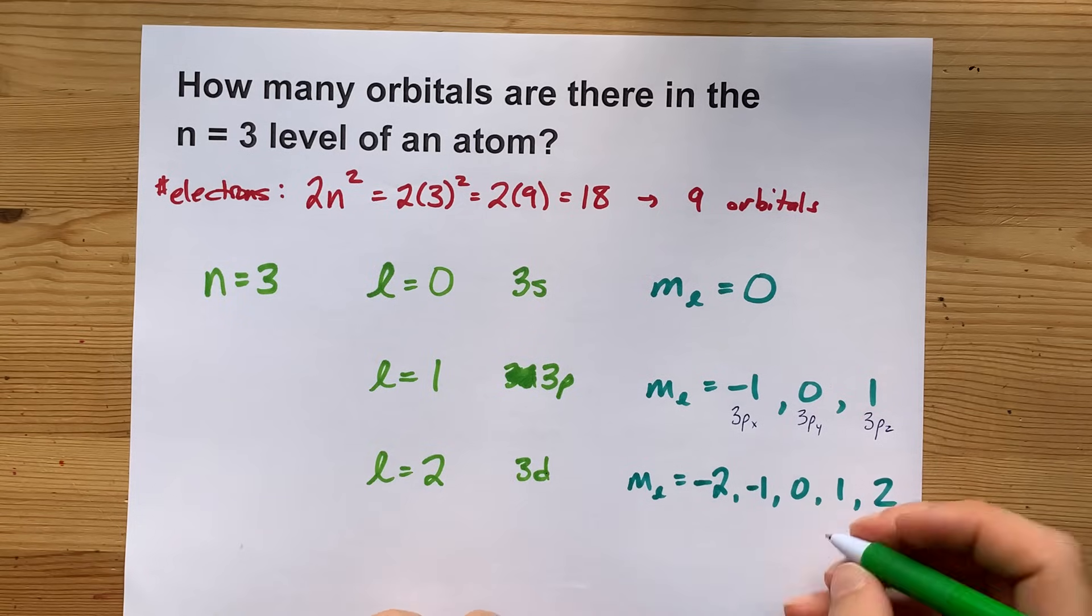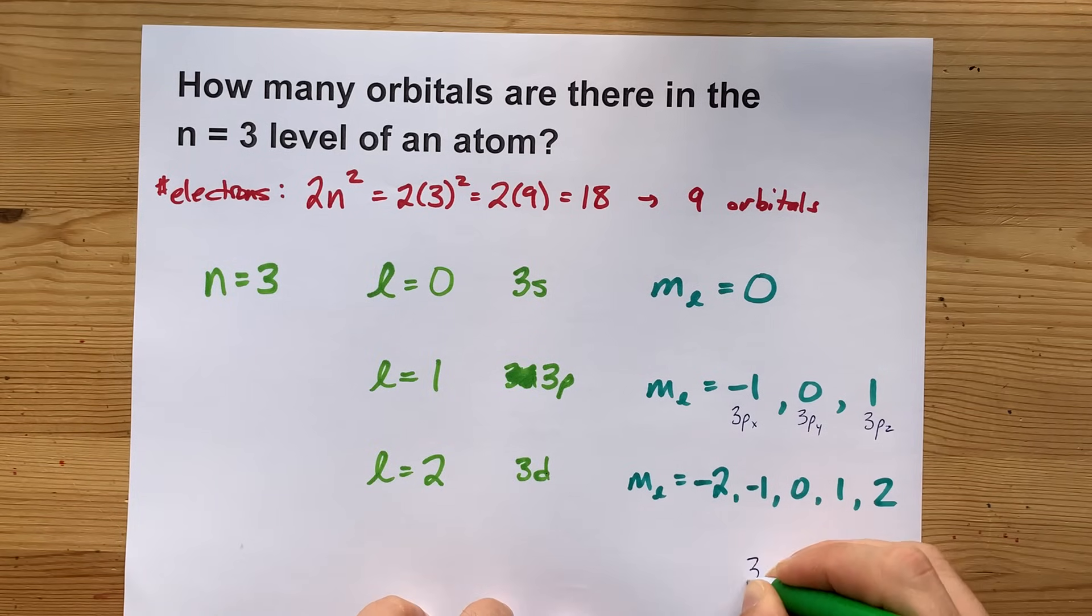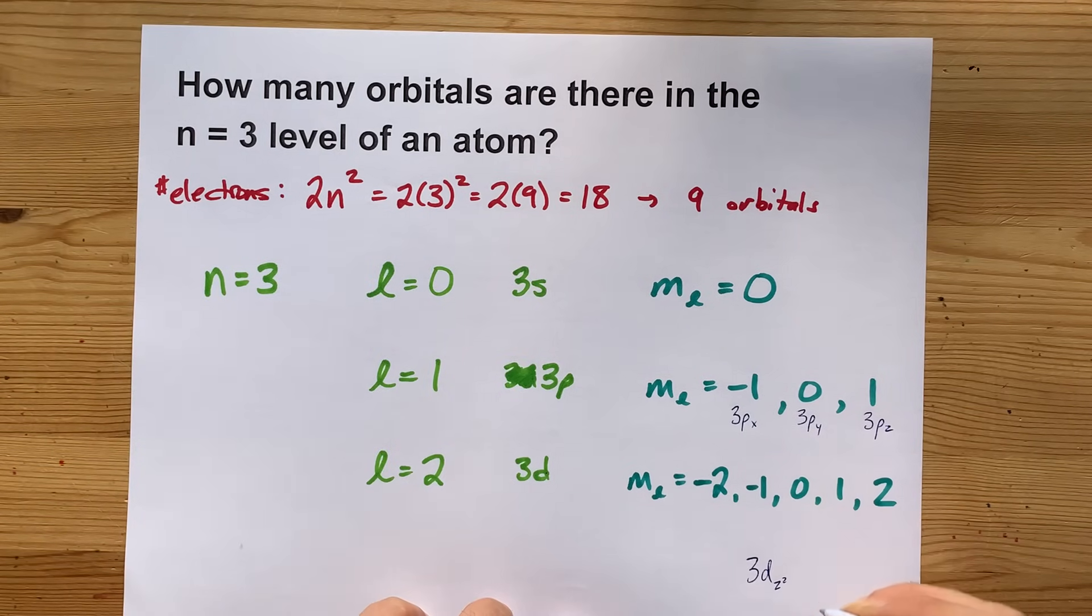These all have special names. One of them is like the 3dz squared. I think there's like an x squared minus y squared or something. I personally haven't memorized them.